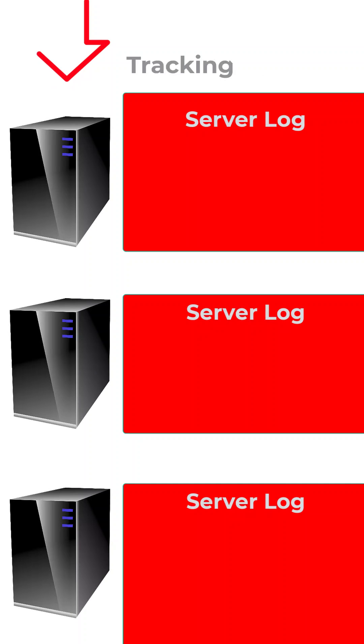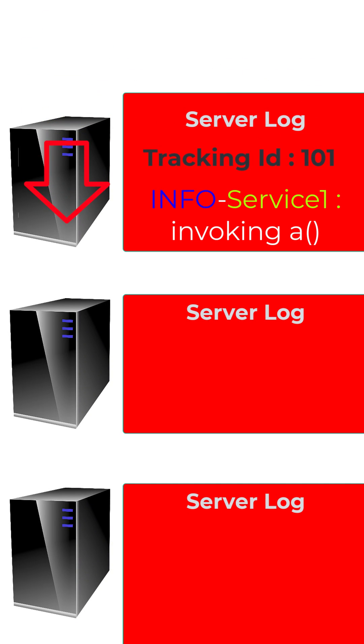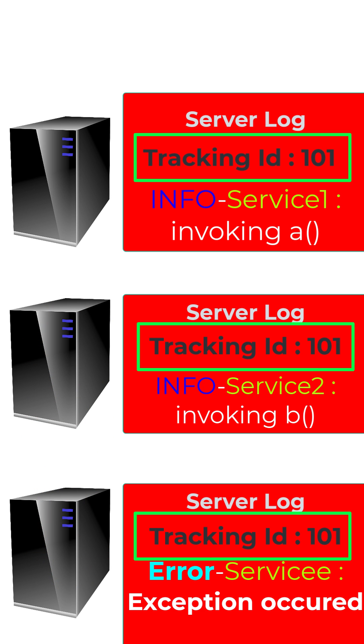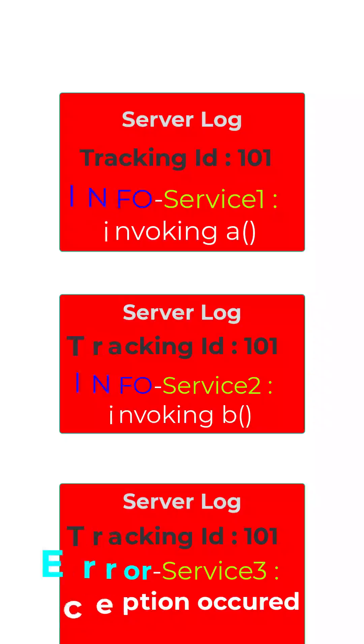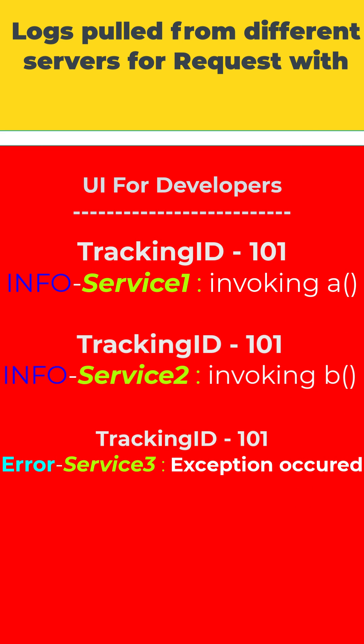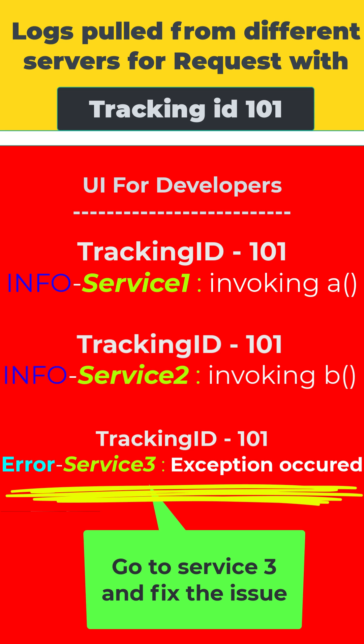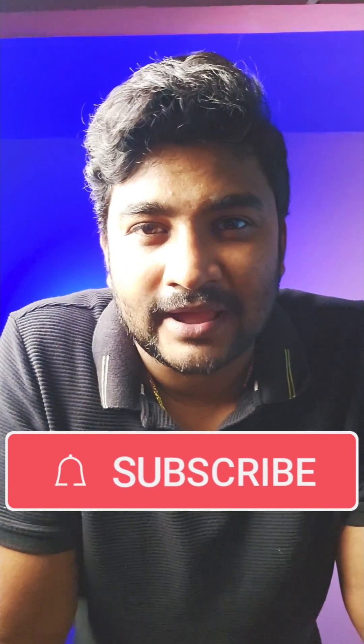When there is an incoming request, we attach a tracking or tracing ID to every request. Whenever the request passes through different servers, it carries the same tracing ID in every server's logs. We then pull all server logs to a centralized place and filter by a specific tracing ID. This makes it really easy for the developer to check all logs from different servers in one place and understand why the request is failing, where the exception is occurring, and identify the culprit app and exception.